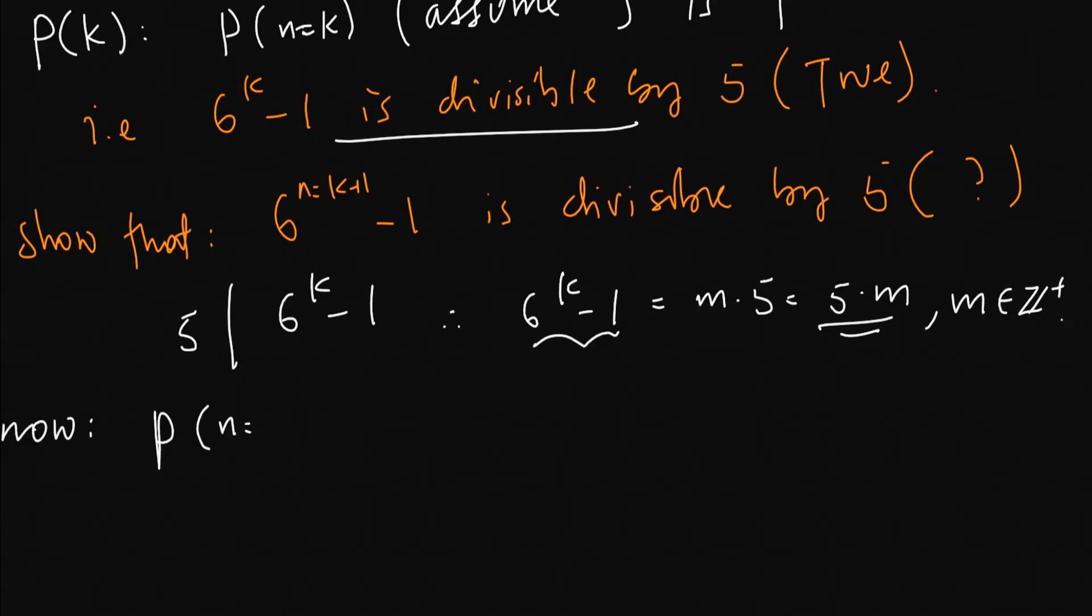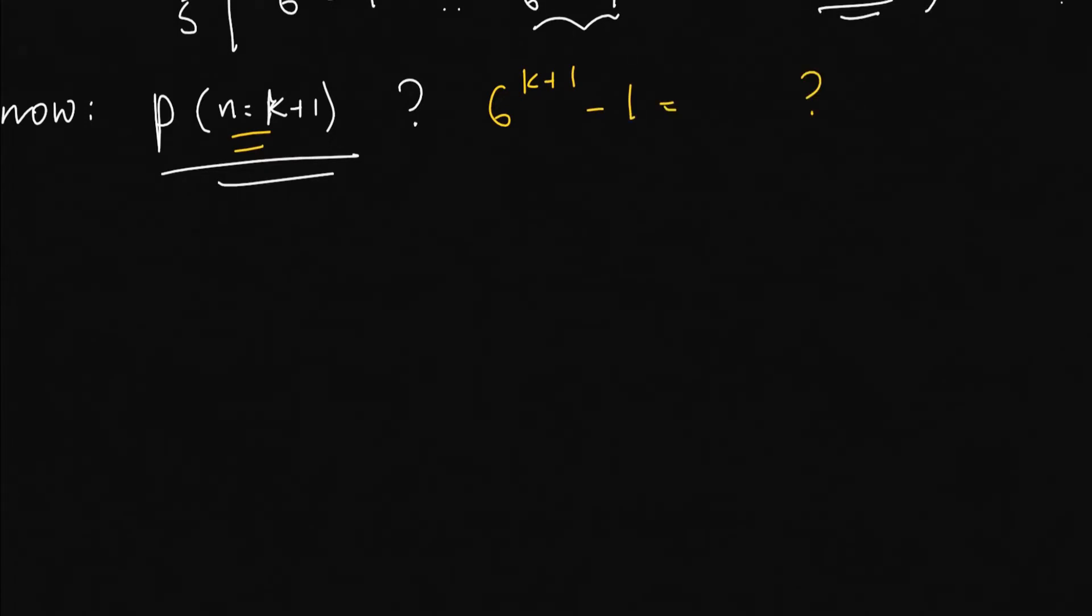By taking the assumption as true, for n equal to k plus 1, we have 6 to the power of k plus 1 minus 1. We use our algebra knowledge and our assumption. 6 to the power of k plus 1 is equal to 6 to the power of k times 6 minus 1. This is equal to 6 times 6 to the power of k minus 1.